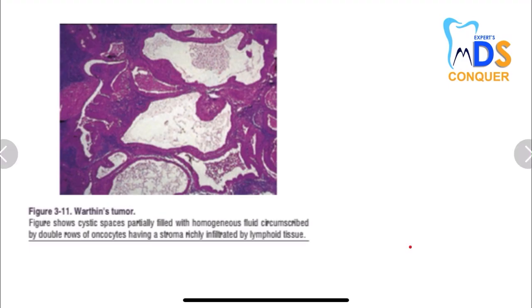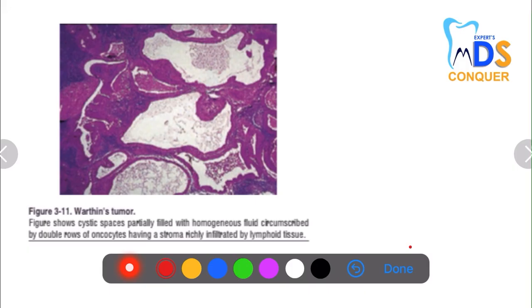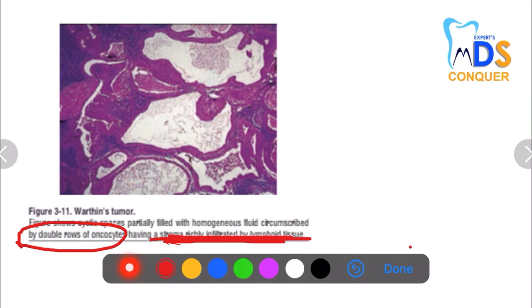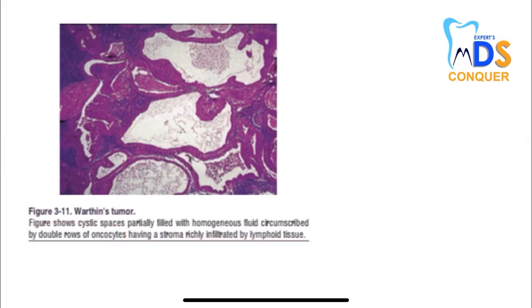Warthin's tumor — very, very important. It exclusively occurs in the parotid gland, being a benign tumor. Histologically, there are cystic spaces filled with homogeneous fluid, circumscribed by double rows of oncocytes, with a stroma infiltrated by lymphoid tissue. So infiltration with lymphoid tissue in a benign tumor of the parotid gland means you go for Warthin's tumor. Underline: double rows of oncocytes with a stroma infiltrated by lymphoid tissue.